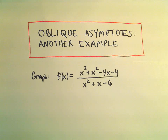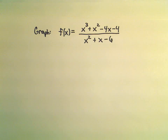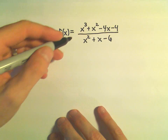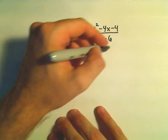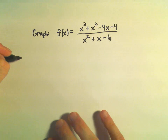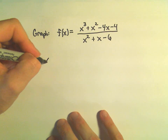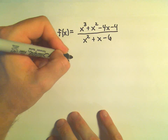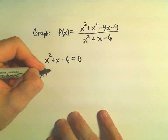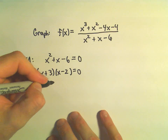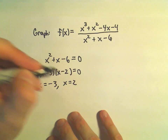In this example we're going to graph the rational function x cubed plus x squared minus 4x minus 4 over x squared plus x minus 6. First, I'm going to think about the domain and any vertical asymptotes. To figure out vertical asymptotes, I'll set the denominator equal to 0. This factors as x plus 3 times x minus 2 equals 0, giving x equals negative 3 and x equals positive 2.